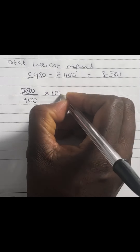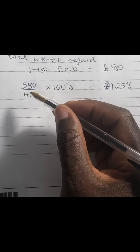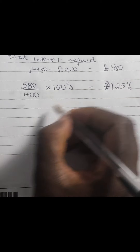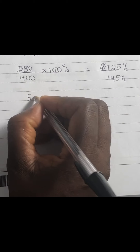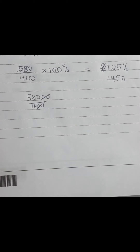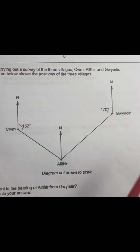To express £580 as a percentage of £400, we calculate 580 over 400 times 100%. That gives us 580 divided by 4, which equals 145%. So the total interest paid was 145% of the original loan.